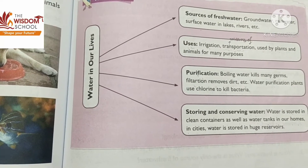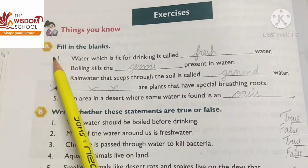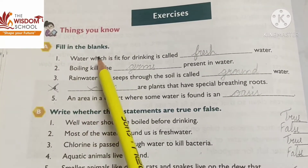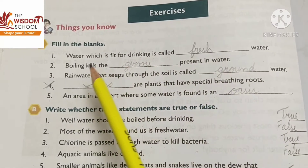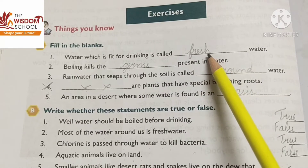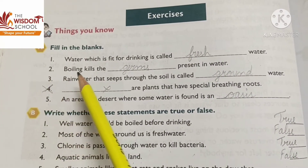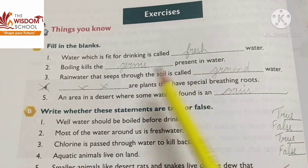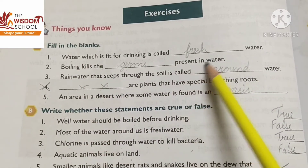Okay students, now let us revise book work, Part A — Fill in the Blanks. First one: water which is fit for drinking is called dash water. Water jo fit for drinking hai, usse kya bola jata hai — fresh water. Second one: boiling kills the dash present in water. Boiling se kya kill ho jata hai jo water mein present hota hai — that is germs.